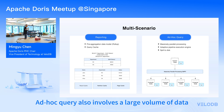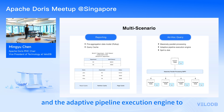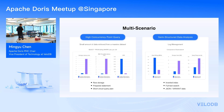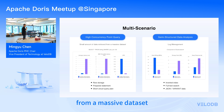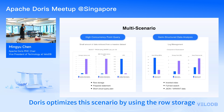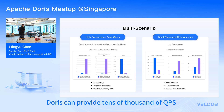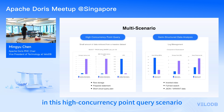For ad hoc queries, which also involve large volumes of data, Doris leverages its massively parallel processing architecture and adaptive pipeline execution engine to offer high-throughput ad hoc query service. For high-concurrency point queries, a small amount of data needs to be retrieved precisely from a massive dataset — for example, selecting all columns from a billing table where user ID equals a specific value. Doris optimizes this scenario using row storage, prepared statements, and short-circuit query plans. Thanks to these optimizations, Doris can provide tens of thousands of QPS in a single node.